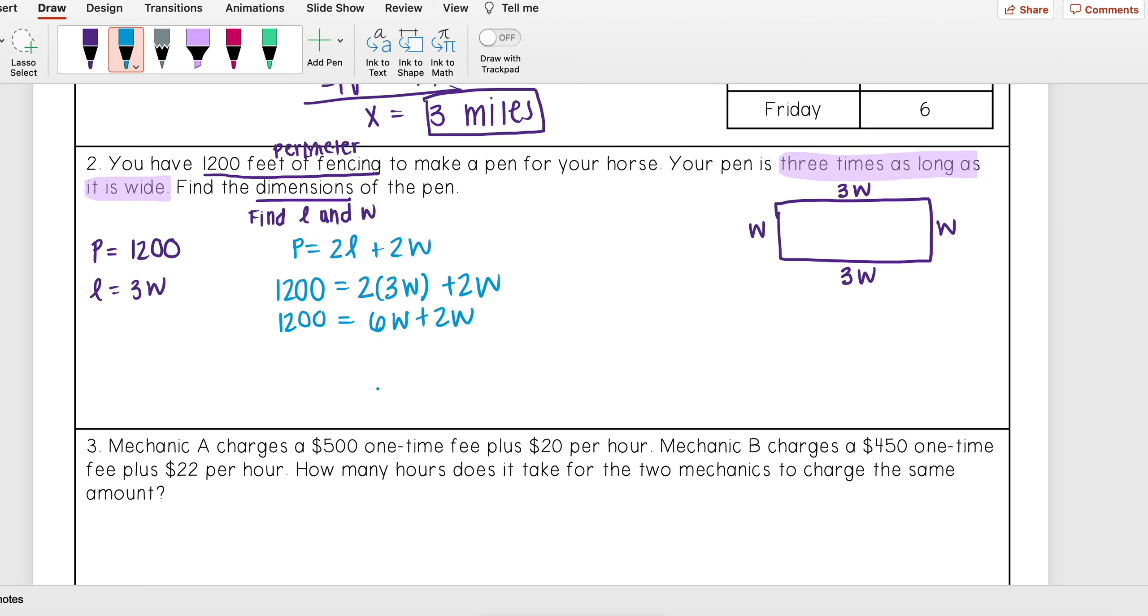2 times 3w I get 6w. 6w plus 2w I get 8w. And then when I divide both sides by 8, I get that my width is equal to 150. And then to find my length, I just need to do 3 times my width, which is 150, to get 450 feet. So that means that my pen for my horse is 150 feet by 450 feet.